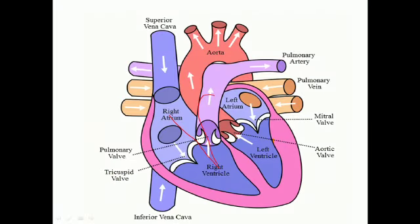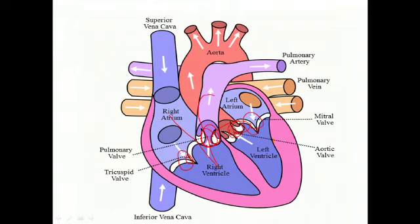Another important point related to the cardiac cycle is the lub-dub sound produced during the heartbeat. Due to the contraction of the heart, the tricuspid and bicuspid valves close and the semilunar valves open. During systole, the lub sound is produced due to the closing of the tricuspid and bicuspid valves. Here you can see the bicuspid valve and the tricuspid valve closing, while the semilunar valves are opening. The closure of these atrioventricular valves produces the lub-dub sound.